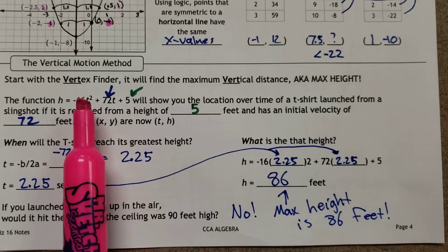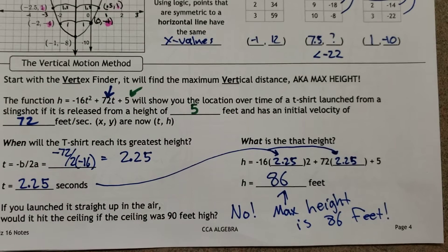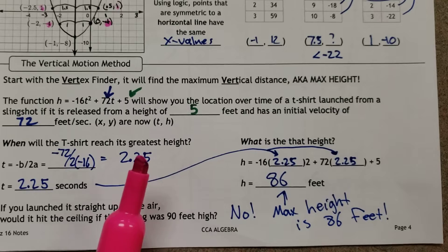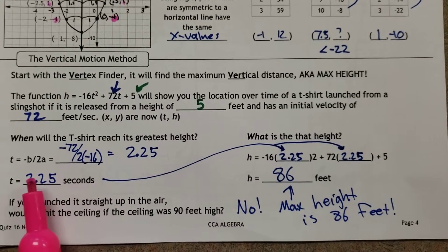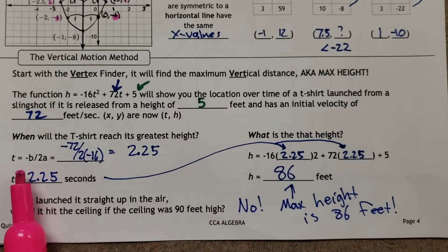And then the -16t² - that's gravity. That's always going to be the same. So how do we do this? Now the questions always start off, well, how high? Well, we can't figure out how high until we figure out what time, and that's what the vertex finder helps us out with.